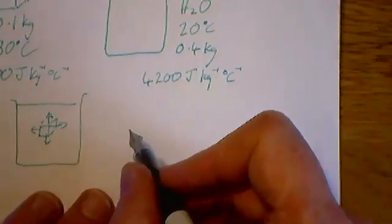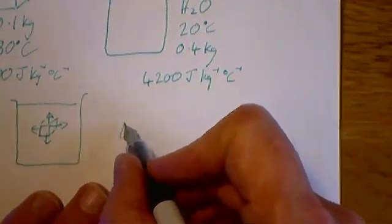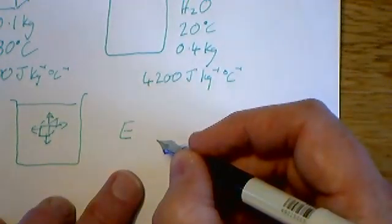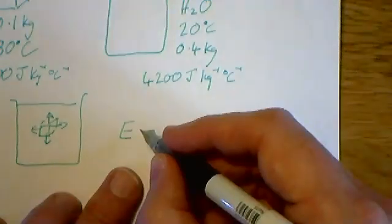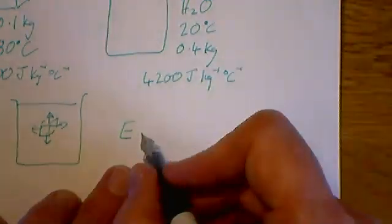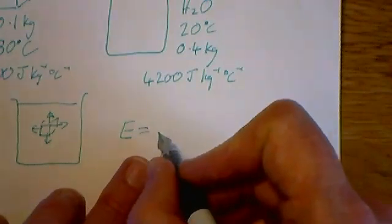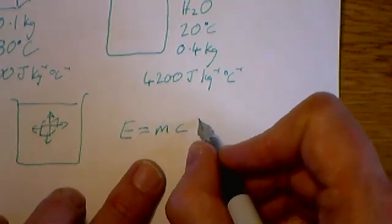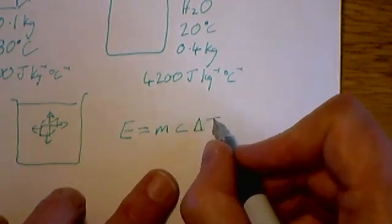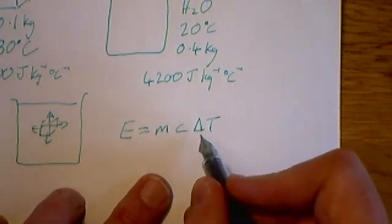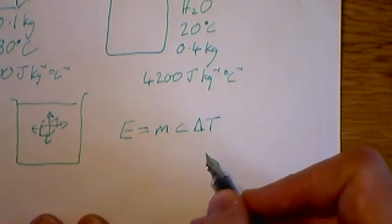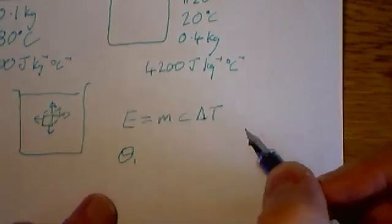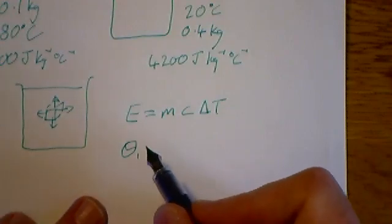We're talking about energy transfer in this instance. You will have done in GCSE heating objects or cooling objects down. The energy transfer is just going to be the mass multiplied by the specific heat capacity multiplied by delta T, that change in temperature. So this represents how much the temperature has changed. And here, we're going to say that theta one is going to be the temperature of the two finally settle at.